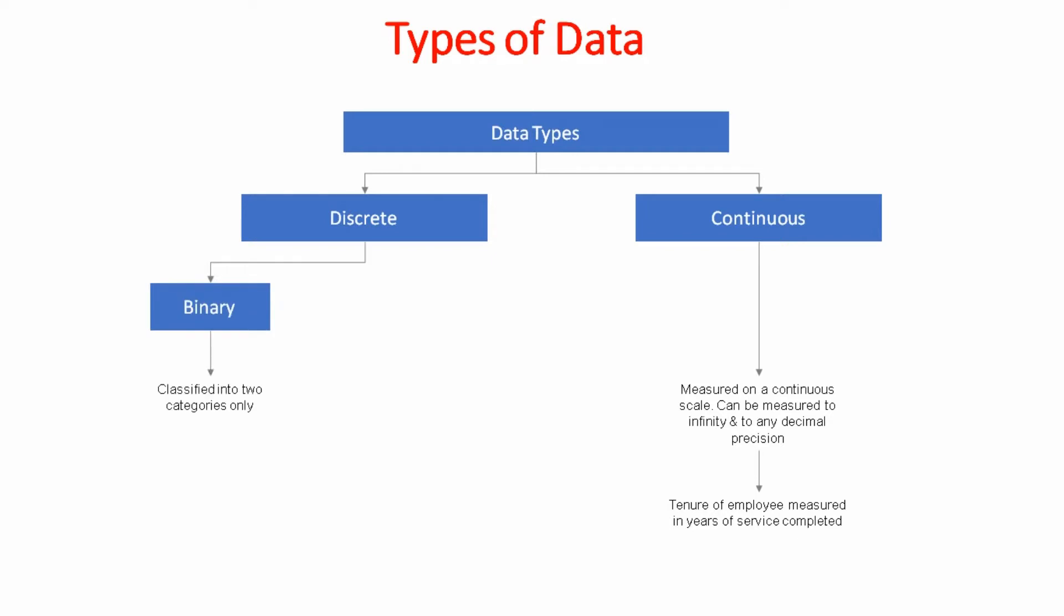Discrete data is of three types. Binary. Binary data has two outputs: in, out, pass, fail, yes, no.